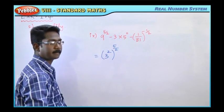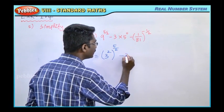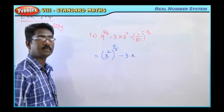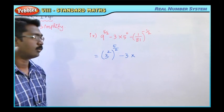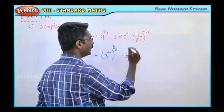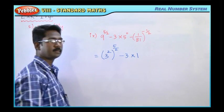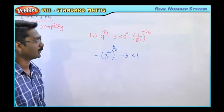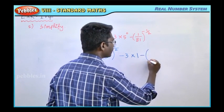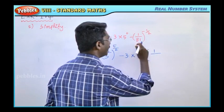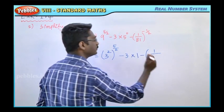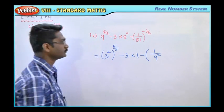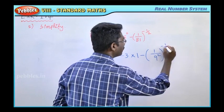Minus 3 into 5 power 0. Power 0 is 1, therefore 5 power 0 is 1. Minus 1 by 81. So in 81, we will change 9 square, 9 into 9, 81, whole power minus 1 by 2.